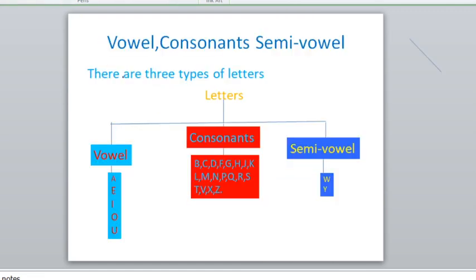Vowel, consonant, and semi-vowel. There are three types of letters. Vowel has five types of letters: A, E, I, O, and U.